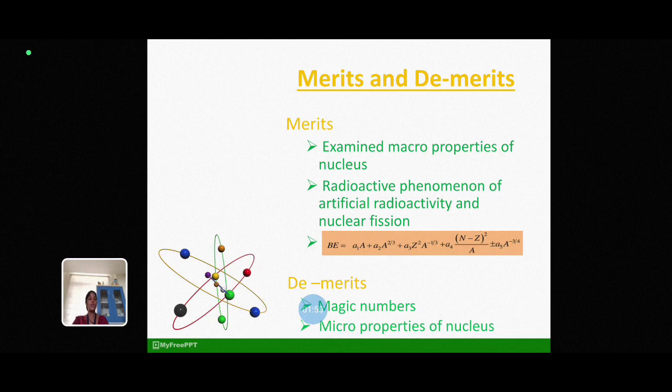It is also known as the semi-empirical mass formula for a nucleus of mass number A that contains Z proton and N neutrons. In this expression, the first term is referred as a volume energy of a nucleus and the second term is referred as a surface energy of a nucleus.